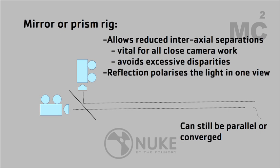Another thing you'll hear a lot about: mirror or prism rigs. Camera bodies are fairly large by nature, so if you put two Red cameras together the actual separation between the optical axes is fairly large, which limits the kind of shooting you might want to do — particularly for close-up work. A more sophisticated setup uses a mirror or prism, which allows the cameras to be arranged so you can get the optical axes really close, or even on top of each other if needed, avoiding excessive interaxial separation and therefore excessive disparities in the two views.